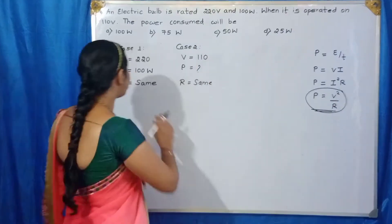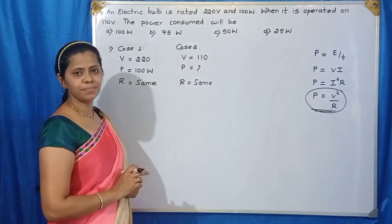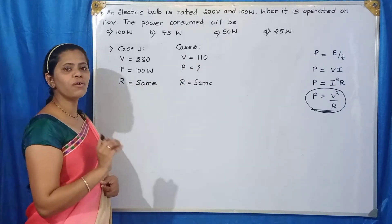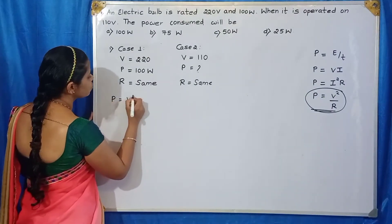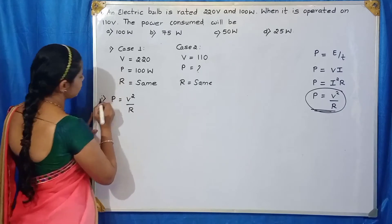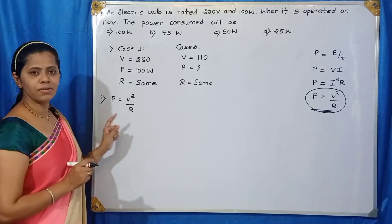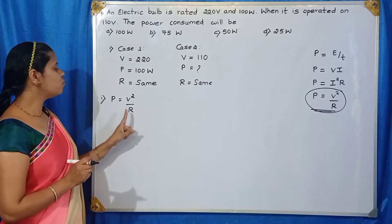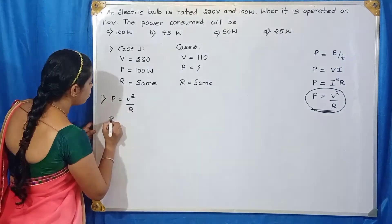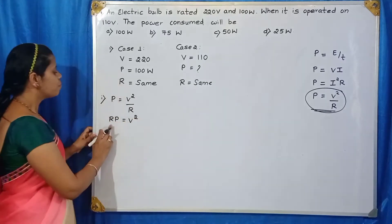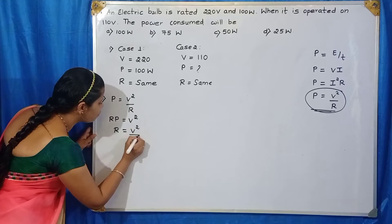We will use this formula to find out the resistance, because resistance remains the same in both cases and voltage is given. So first we have to find out the resistance. Using P = V²/R for the first case, power and voltage are given; R is unknown. Cross multiplying: R × P = V², so R = V² divided by P.